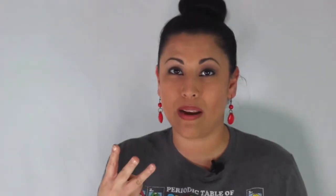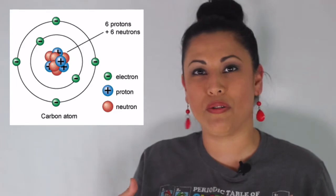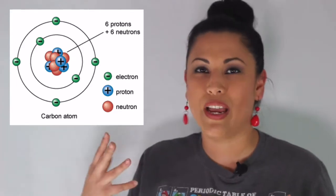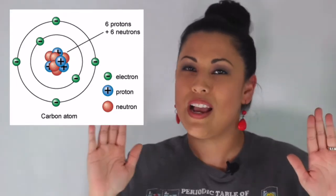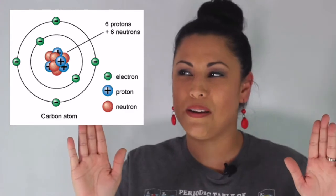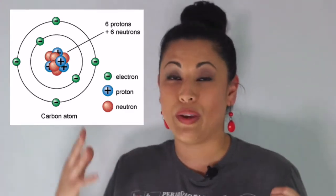There are three main parts of an atom, or three subatomic particles — go ahead and say that with me, get used to it: subatomic particles. Here we have a carbon atom, and it shows you the three particles and what an atom looks like. It's not exact, but it's basically a 2D frozen atom — this is called a Bohr model.